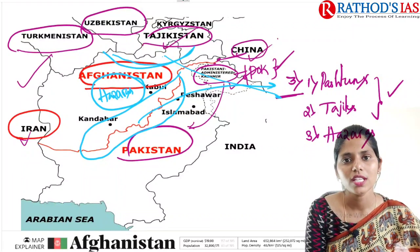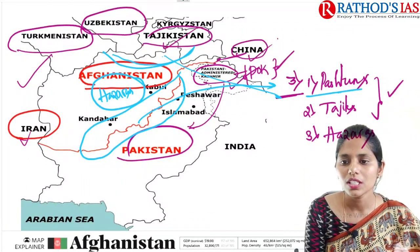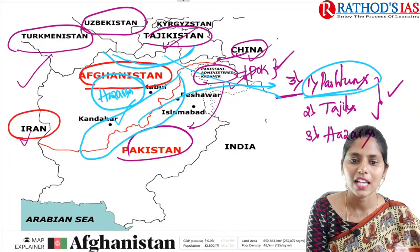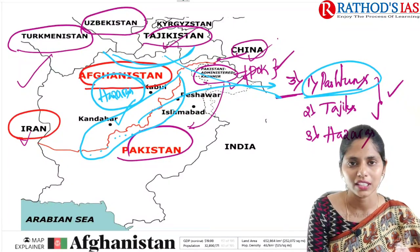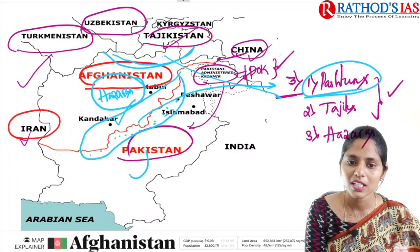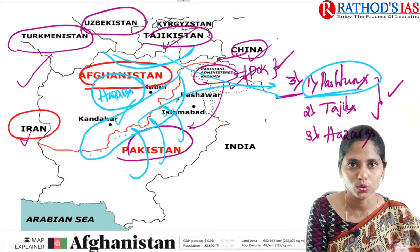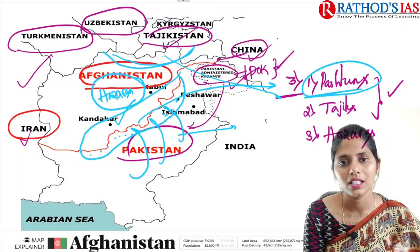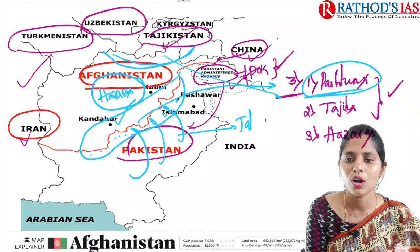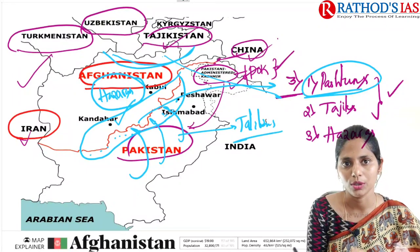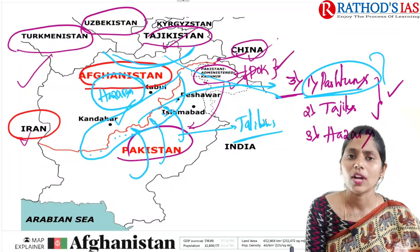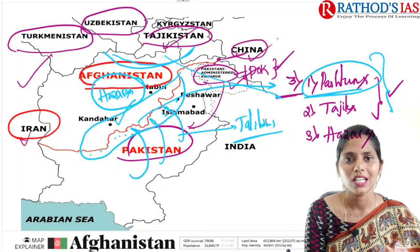One important point: Pashtuns are mainly seen in Afghanistan and also in some areas of Pakistan. Pakistan mainly supports these Pashtuns. These Pashtuns are none other than the Talibans — Talibans belonging to the Pashtun community. So this is about the tribal or ethnic groups seen in Afghanistan.